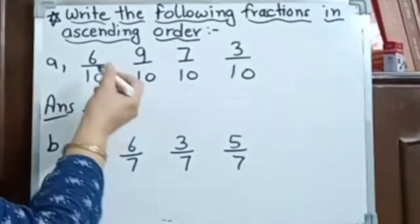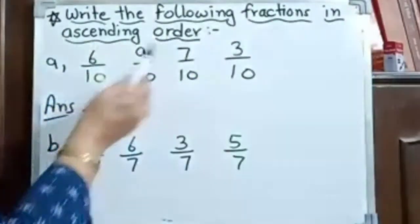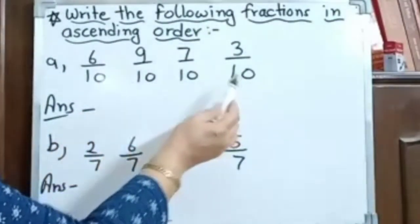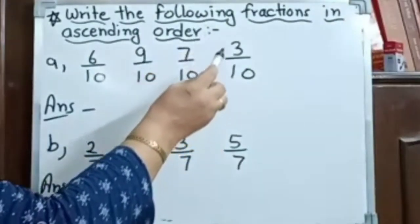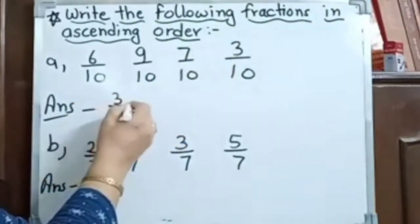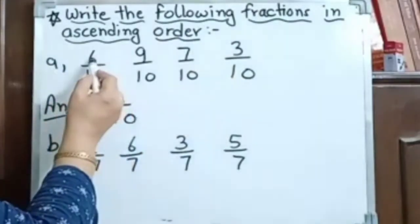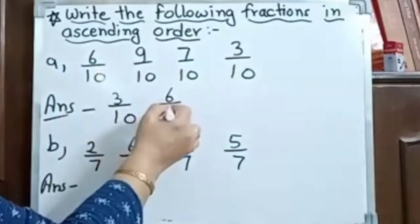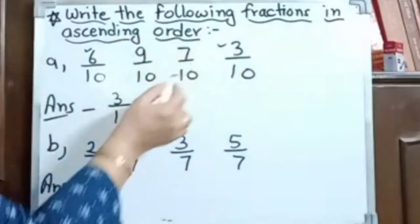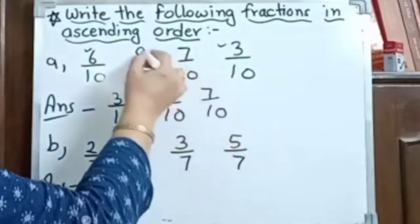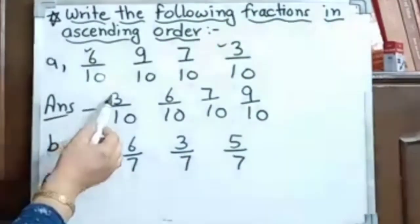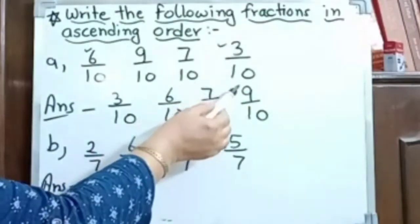Write the following fractions in ascending order. Ascending order means smaller to bigger. First we have to compare the fractions. As we have the same denominator, the smaller numerator is the smaller fraction. The numerators are 6, 9, 7, and 3. So 3 upon 10 is first. Then 6 upon 10. Then comparing 9 and 7, so 7 upon 10 is next. Then last is 9 upon 10. So ascending order is: 3 by 10, 6 by 10, 7 by 10, 9 by 10.